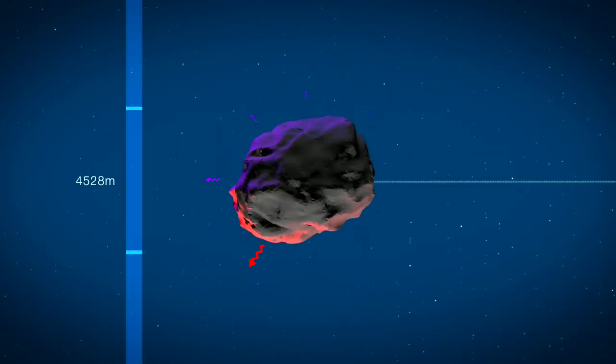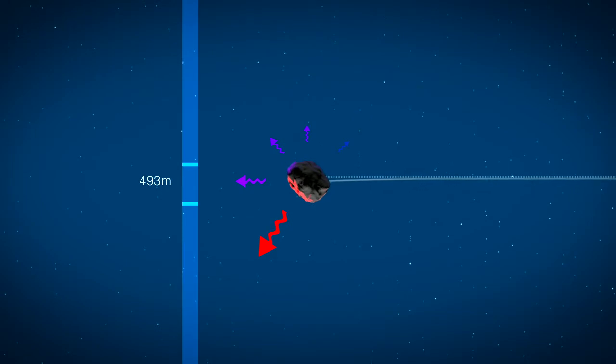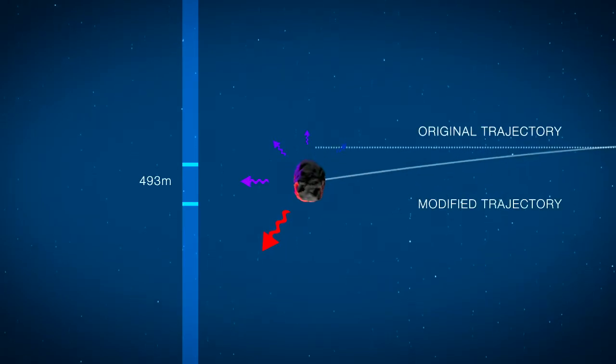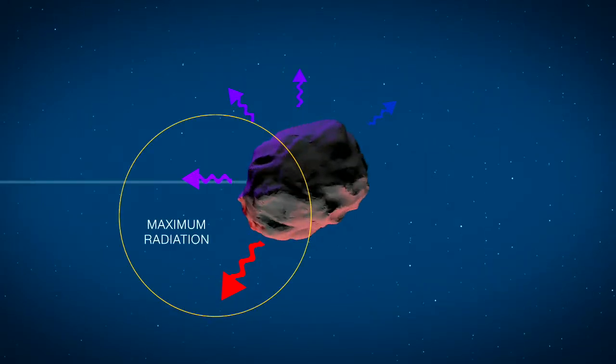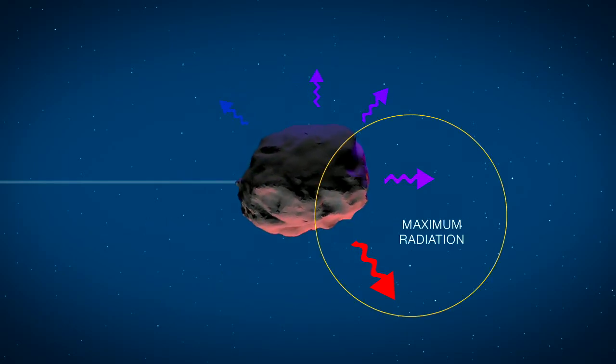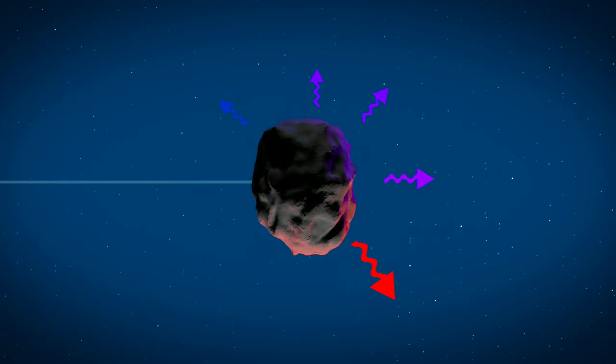On larger asteroids, this doesn't amount to much. But on small ones, it can make a pretty large change over time. Because the surface emits the most heat radiation at the end of the day, the direction the asteroid rotates can ultimately determine what happens in the long run.